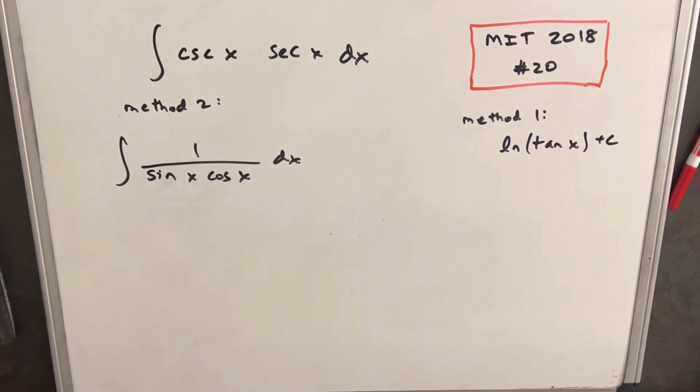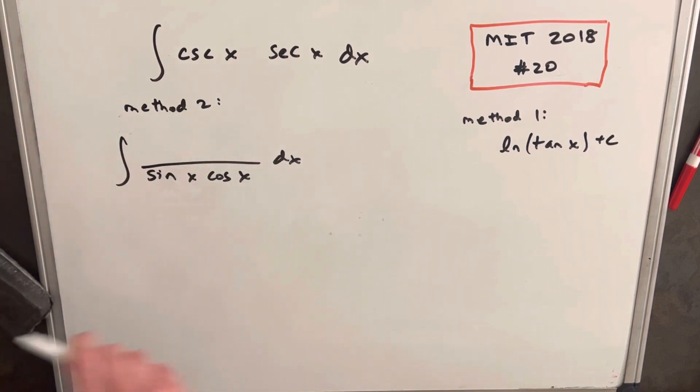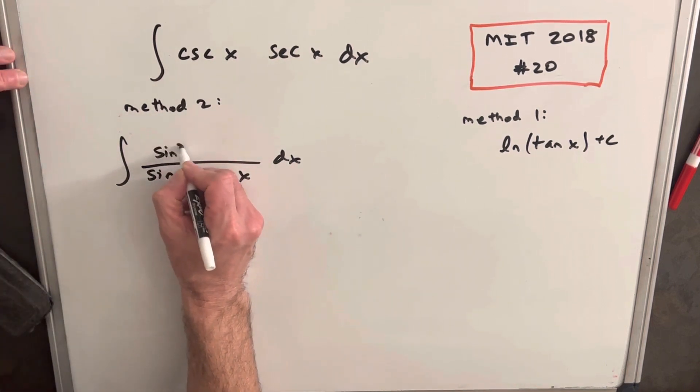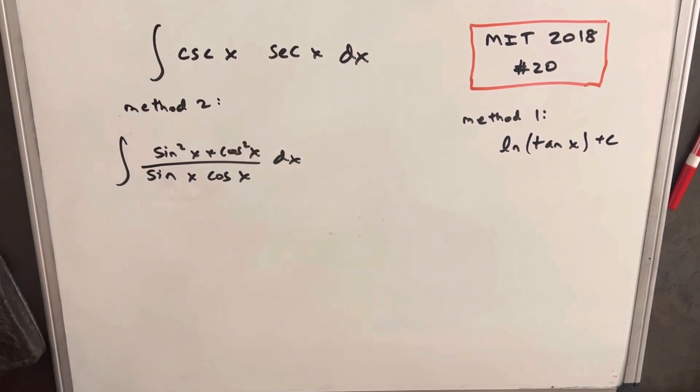What we'll do is we'll make use of this. This is a pretty common trick, is just to take a 1, when we have a trig integral, and just rewrite it as sine squared x plus cosine squared x. Okay, so let's break this into two separate integrals.